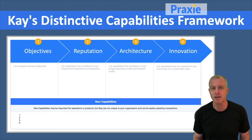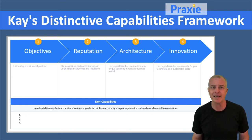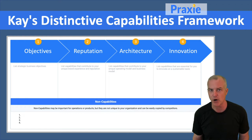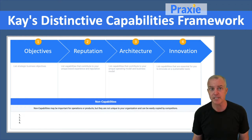The first area is your reputation. What is that brand identity? What is that value and brand promise that you're going to provide to your customers? It's that reputation in the market.